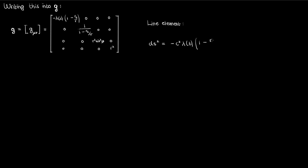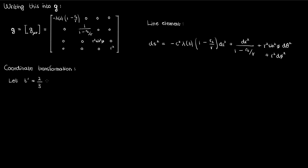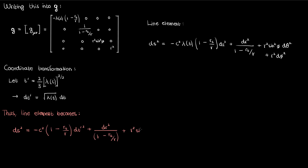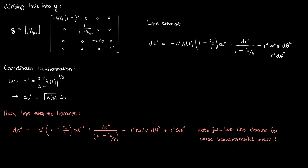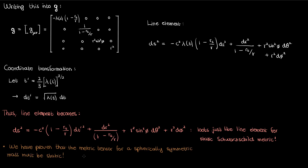Writing the line element corresponding to this metric tensor, and introducing a coordinate transformation T′ = (2/3)·λ(T)^(3/2), we can substitute dT in terms of dT′ — specifically, the square root of λ times dT — into the line element. The result looks exactly like the line element for the static Schwarzschild metric written at the beginning of the video. All we did was change how our coordinate time is scaled. This proves that the spacetime geometry for a spherically symmetric mass is the same regardless of whether that mass is static or dynamic — expanding or contracting spherically symmetrically. The metric is never time-dependent as long as you have spherical symmetry. We've proven Birkhoff's theorem.